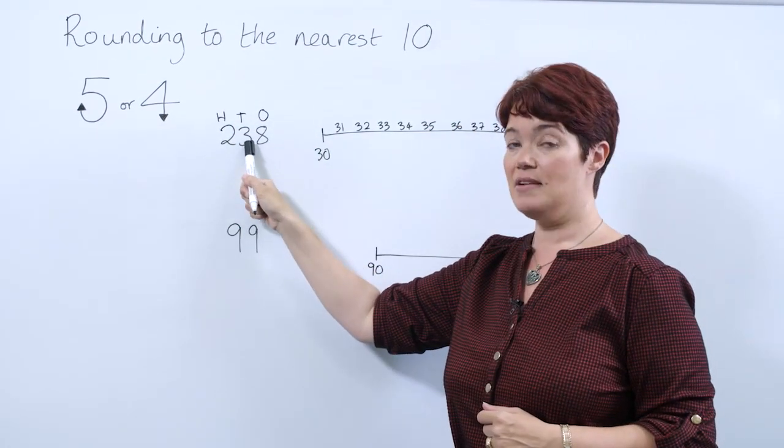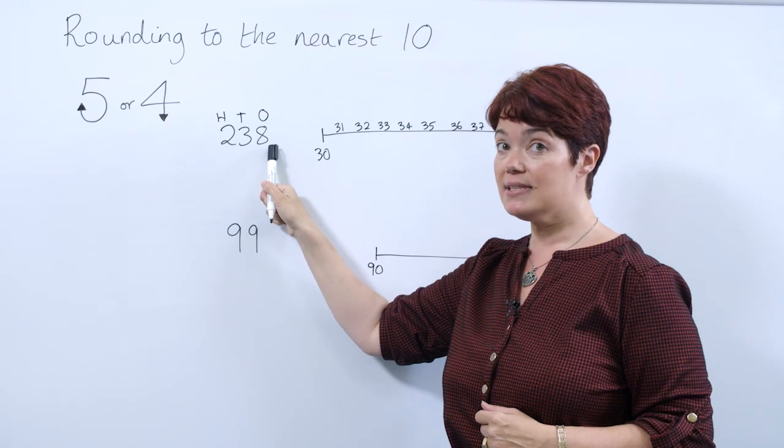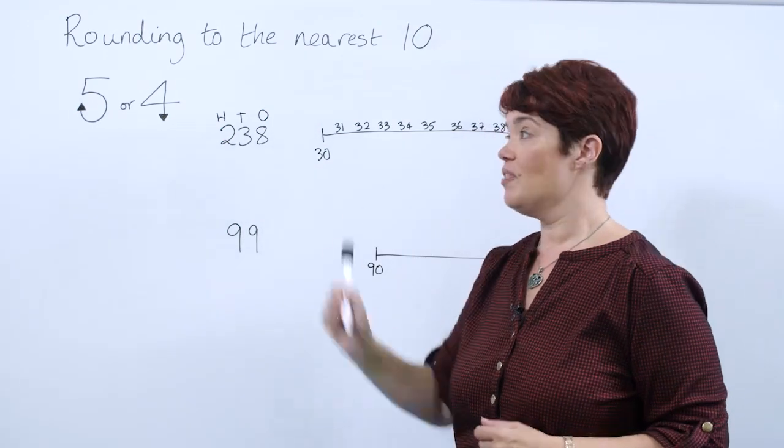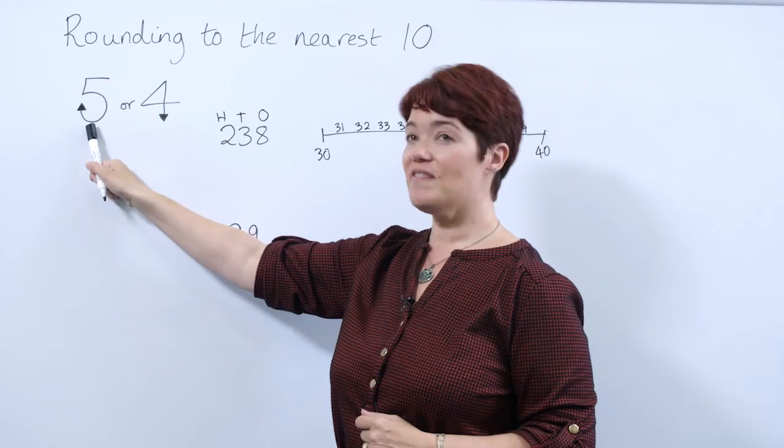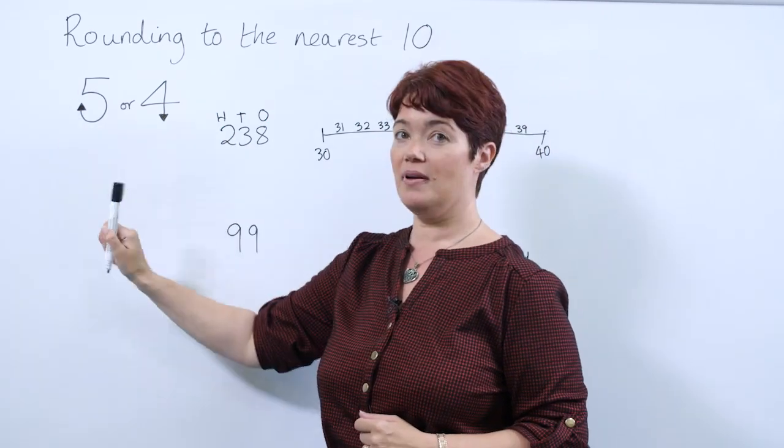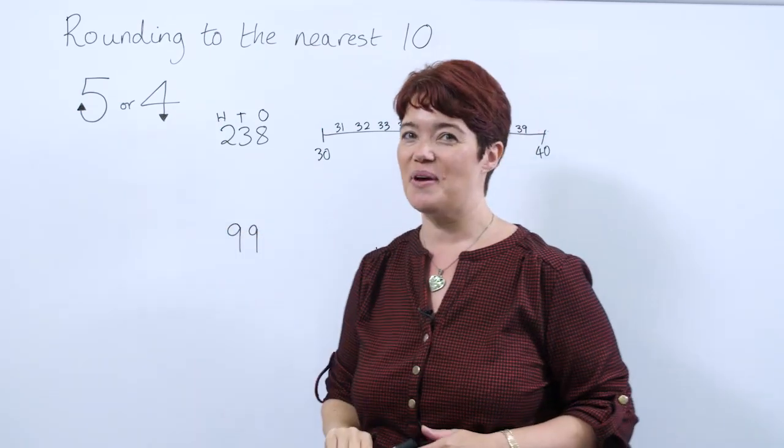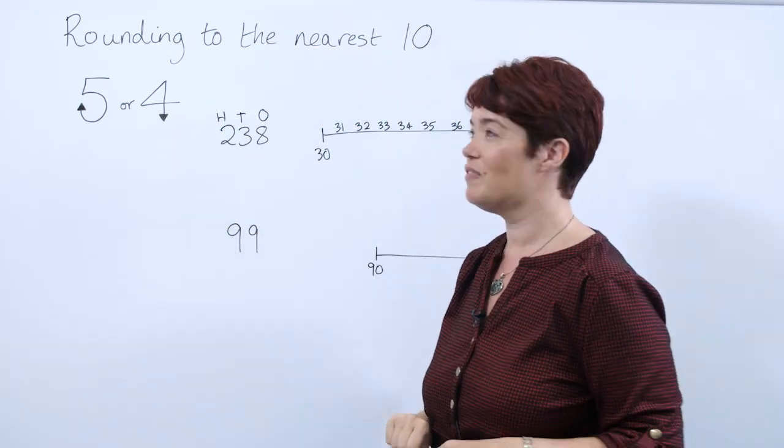Because we're rounding to the nearest 10, we look to the column to the right, so we're going to look at our ones. Now for our pupils, we need to learn this little fact: if it's five or more we round up, four or less we round down. Really helpful having those arrows on there as a little bit of an aid memoir for them.